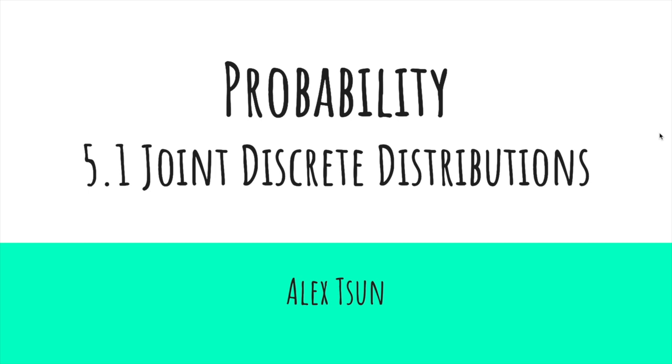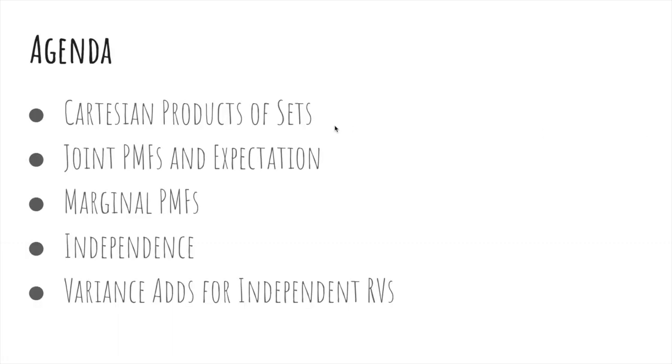In this video, we'll talk about joint discrete distributions. We'll talk about Cartesian products of sets, joint PMFs and expectation, marginal PMFs, independence, and variance adds for independent random variables.